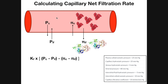We've got a capillary right here, and we're calculating net filtration rate, so we need to understand the processes that facilitate filtration. Filtration is the process by which fluid movement occurs from the capillary into the interstitial fluid. There are also several processes that go in the opposite direction, which is reabsorption — fluid movement from the interstitial fluid into the capillary.